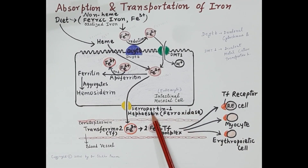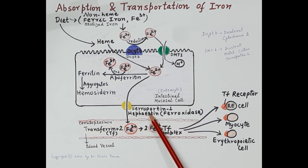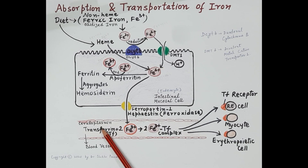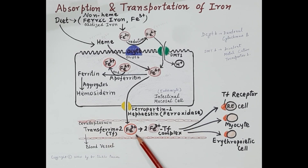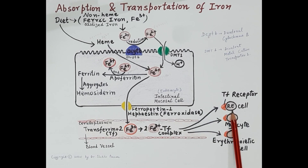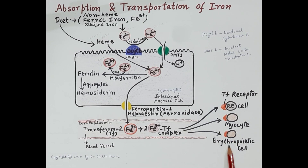A transmembrane protein called ferroportin 1 transports ferrous iron outside the mucosal cells. An enzyme called hephaestin or ferro-oxidase in the mucosal cells, and an enzyme called ceruloplasmin in the blood, oxidize ferrous iron to ferric iron so that iron can bind with a protein called transferrin. This transferrin-ferric iron complex circulates in the blood and is transported to body cells such as reticuloendothelial macrophages, myocytes, and erythropoietic cells, where transferrin binds to transferrin receptors and iron is transported inside the cells.